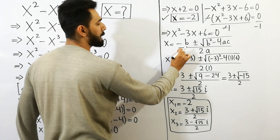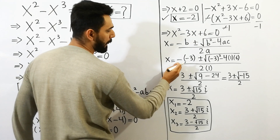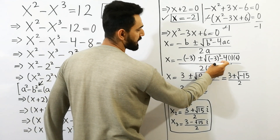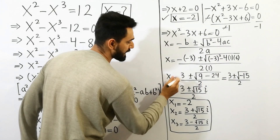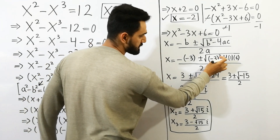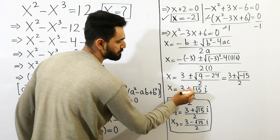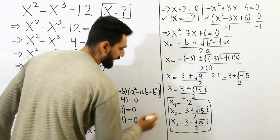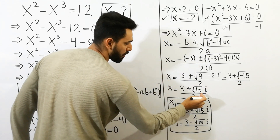By applying the quadratic formula, x equals negative b plus or minus square root of b squared minus 4ac, over 2a. This equals minus, because b is minus 3, plus or minus square root of (negative 3) squared minus 4 times a, which is 1, times c value which is 6, all over 2a which is 1. We get 3 plus or minus square root of 9 minus 24, which gives us 9 minus 24 equal to minus 15, divided by 2.